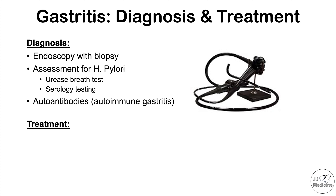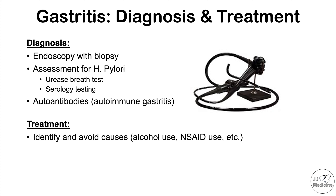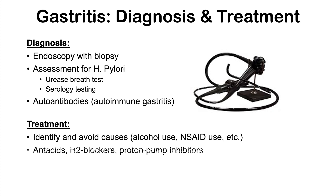For treatment, it's important to identify and avoid causes of acute gastritis, including alcohol use, NSAID use, and H. pylori infection — with good food handling hygiene being key. To reduce destructive processes, antacids may be used in very mild cases, but most cases will require H2 blockers or proton pump inhibitors like pantoprazole. This reduces stomach acidity and helps restore the balance between destructive processes and protective mechanisms.